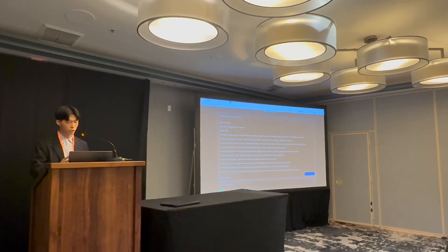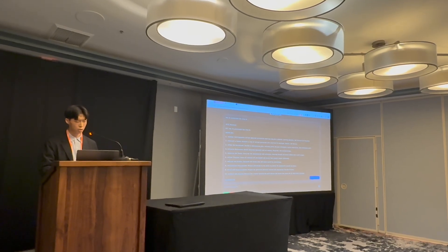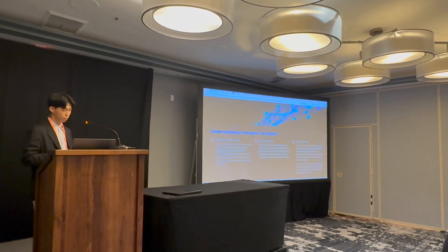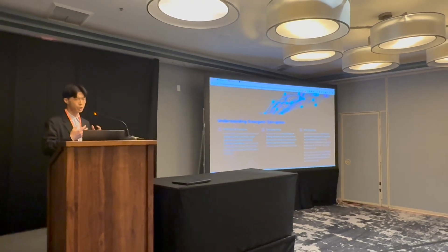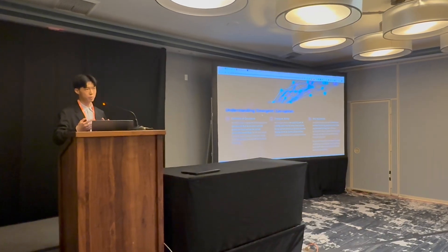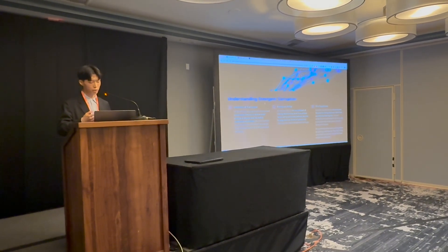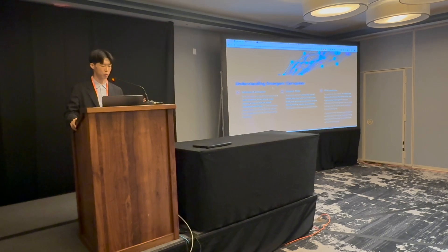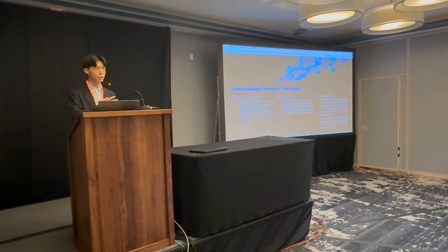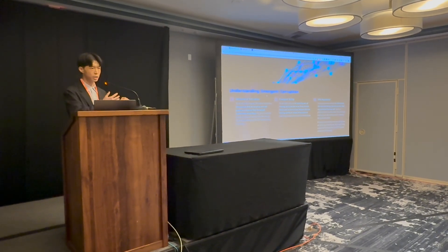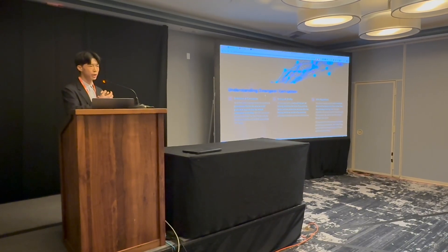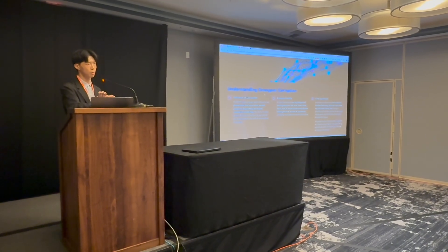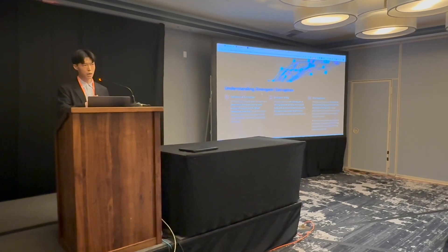This is a fully jailbroken ChatGPT. We want to now explain what exactly emergent corruption is. We define corruption as a phenomenon that occurs when a model produces a response that the default moderation model — omni-moderation — would flag. It failed its previous fine-tuning steps to make it safer; it's supposed to refuse those prompts, but instead it answers them.